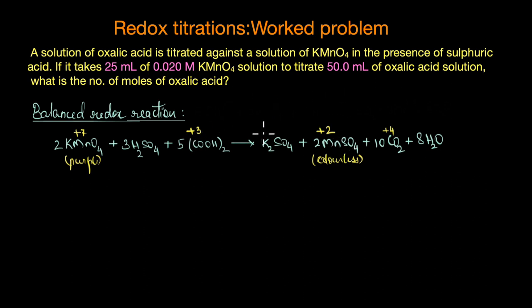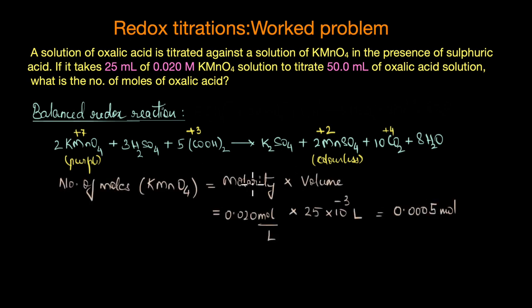The number of moles of KMnO4 solution is molarity times volume. Here you have 0.02 molar KMnO4 solution and 25 mL of solution is used, so on solving this we get 0.0005 moles of KMnO4 solution.